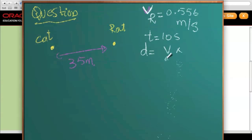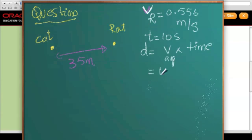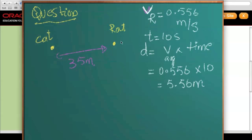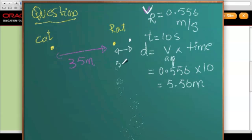The formula for distance is velocity average times time. In this case the velocity is average because it's running at a constant velocity. So velocity average times time: 0.556 meters per second times 10 seconds gives us 5.56 meters. So we know the rat ran a distance of 5.56 meters.